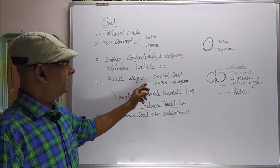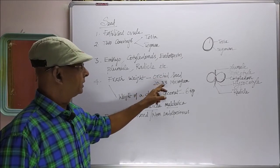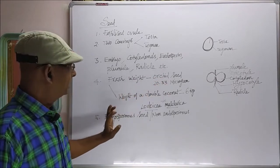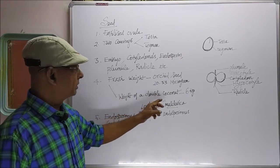The fresh weight of the seed in orchid is 0.33 microgram, but in the case of double coconut, that is Lodoicea maldivica, it is 6 kg.